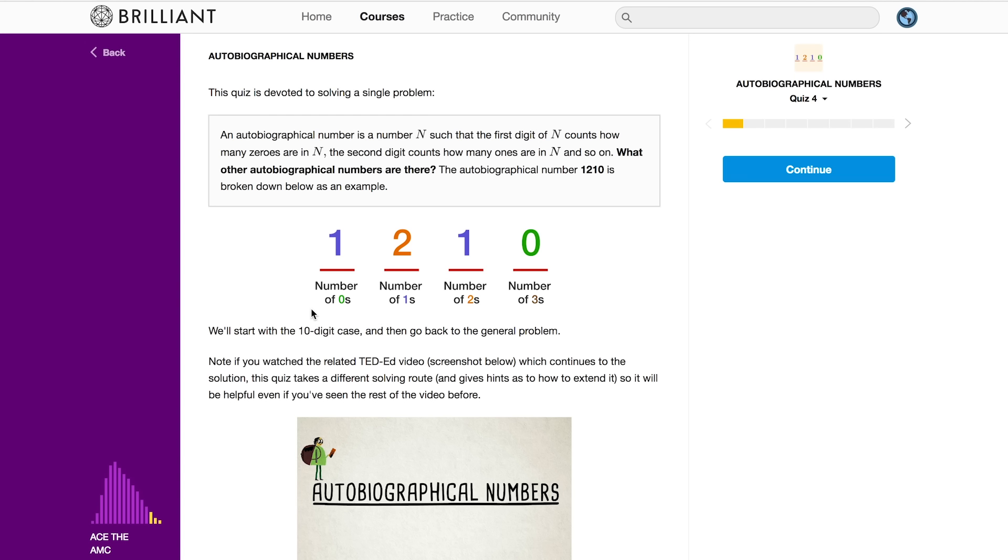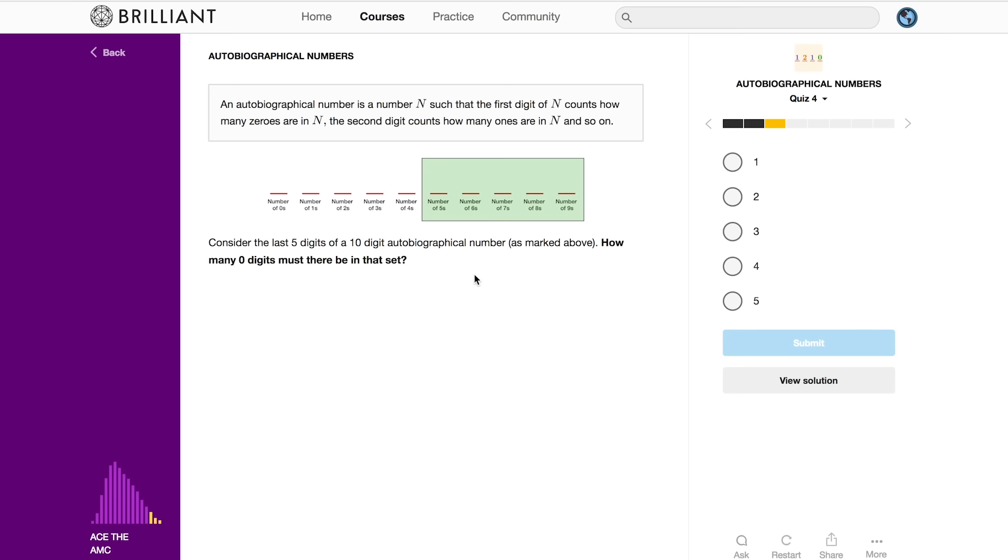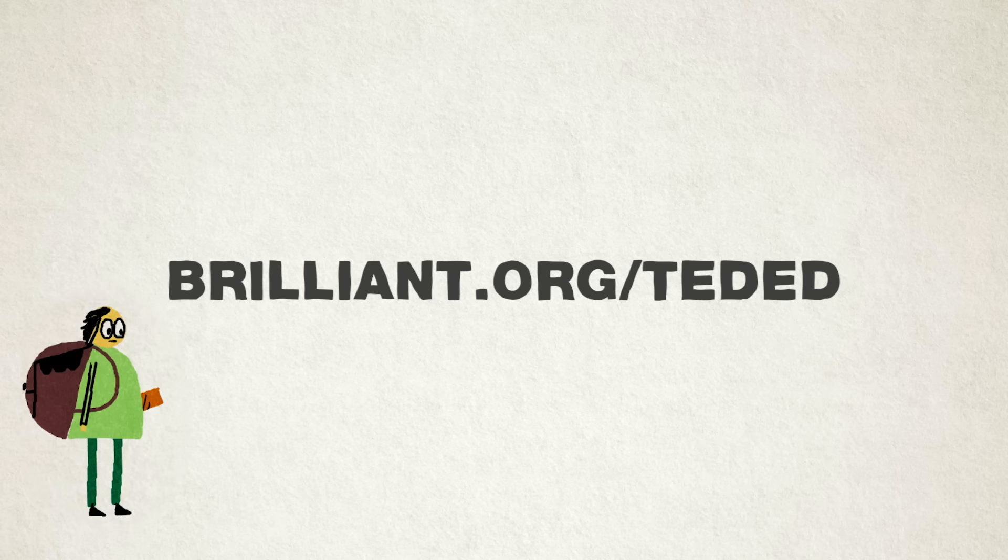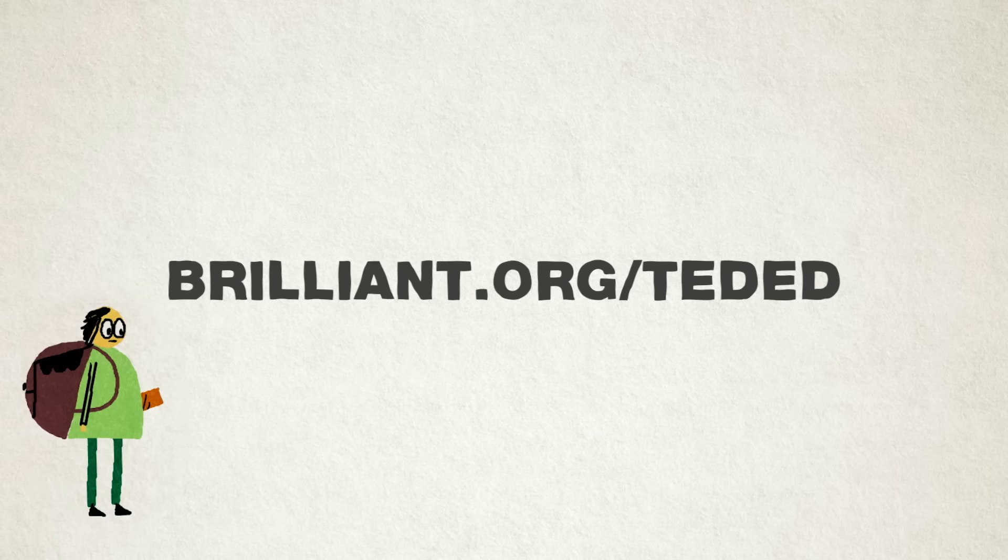Brilliant can show you how to solve new and unfamiliar problems by using critical reasoning skills. They provide frameworks to think about problems and understand how concepts relate to each other. If you're interested in improving your critical reasoning skills, the first 833 of you who visit Brilliant.org slash TedEd will get 20% off the annual premium subscription.